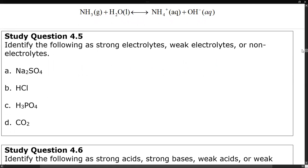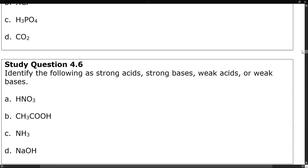Let's identify these as strong electrolytes, weak electrolytes, or non-electrolytes. Sodium sulfate is a strong electrolyte because it is a water-soluble salt. HCl is a strong acid, so it is a strong electrolyte. H3PO4 is water-soluble, but it is a weak electrolyte because it was not on the strong acid list — in fact, it was in our weak acid list. Carbon dioxide is a non-electrolyte because it is a covalent compound. Next, identifying as strong acid, strong base, weak acid, or weak base: HNO3 (nitric acid) is a strong acid; CH3COOH (acetic acid) is a weak acid; ammonia is a weak base; and sodium hydroxide is a strong base.